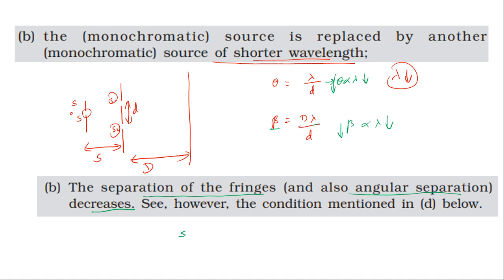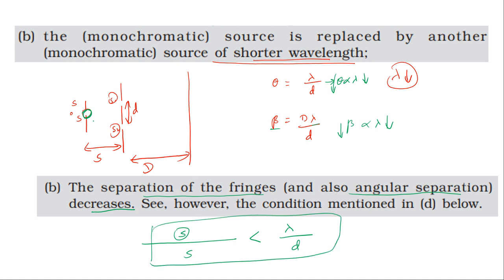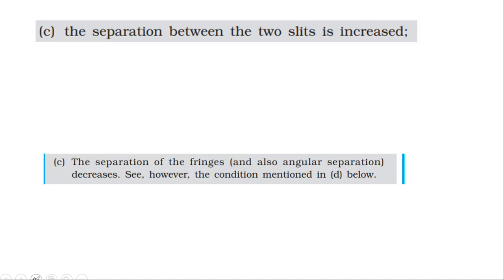The coherence condition requires that the size of the source divided by the distance of the source from the slits should be less than wavelength divided by d, where d is the distance between the slits. If this condition is satisfied, an interference pattern is formed. If the condition is not satisfied — i.e., the size of the source is too large — no clear interference pattern is formed.